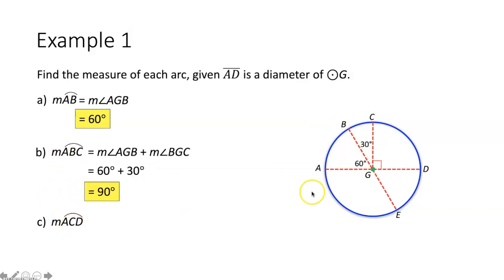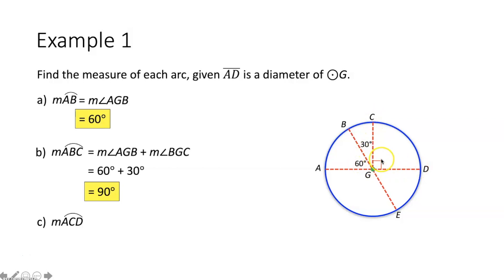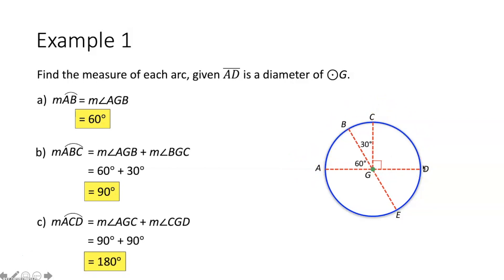Lastly, we want to find the measure of arc ACD. Since segment AD is a diameter of circle G, arc ACD must be a semicircle, meaning its measure must be equal to 180 degrees. You could also say the measure of angle AGC — this 90 degree angle — plus the measure of angle CGD — this 90 degree angle — add together to equal the measure of arc ACD, which is 180 degrees.